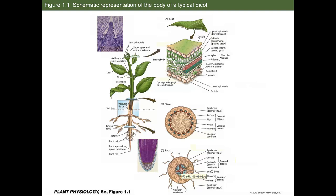Just underneath the endodermis is the pericycle, which is that meristematic tissue — the stem cells of the plant. This is where the lateral roots form. The lateral roots which we see on the main plant form here in the pericycle, not to be confused with root hairs, which are extensions of the epidermal tissue. Inside the pericycle, we have the conductive tissue within the root, primarily taking water absorbed by the root up to the canopy, and also distributing sugars and other carbohydrates formed in the leaves around the root zone.